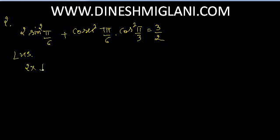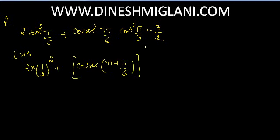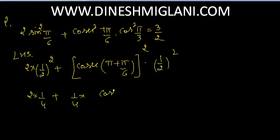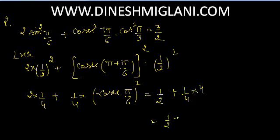sin pi by 6 = 1/2, so 2 × (1/2)² plus cosecant of (pi + pi/6), whole squared, into cos(pi/3) = cos 60° = 1/2, squared. This is 2 × 1/4 plus cosecant in the third quadrant, which is negative, so minus cosecant(pi/6), squared. That is 1/2 plus cosecant 30° = 2, so 2² = 4, and 1/4 × 4 = 1. So 1/2 + 1 = 3/2. Hence, the answer is 3 by 2.